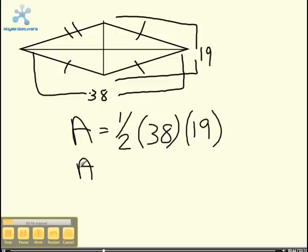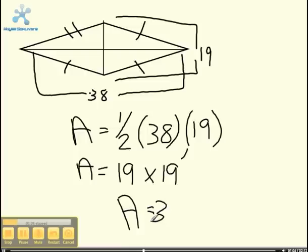After the lengths are plugged in, you multiply the length of diagonal one by two. Once you get that answer, you multiply it by the length of diagonal two. So you have 38 times 19 divided by two. The area would be 361 units squared.